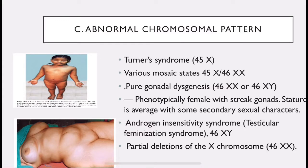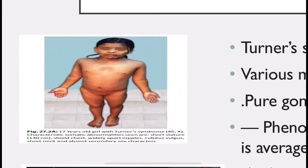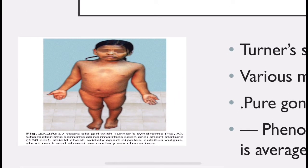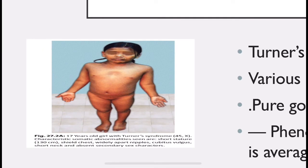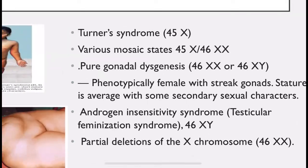Abnormal chromosomal patterns include Turner's syndrome (45X): characteristic somatic abnormalities include short stature, shield chest, widely apart nipples, cubitus valgus (a deformity where the forearm is angled away from the body when the arm is extended), short neck, and absent secondary sex characters.